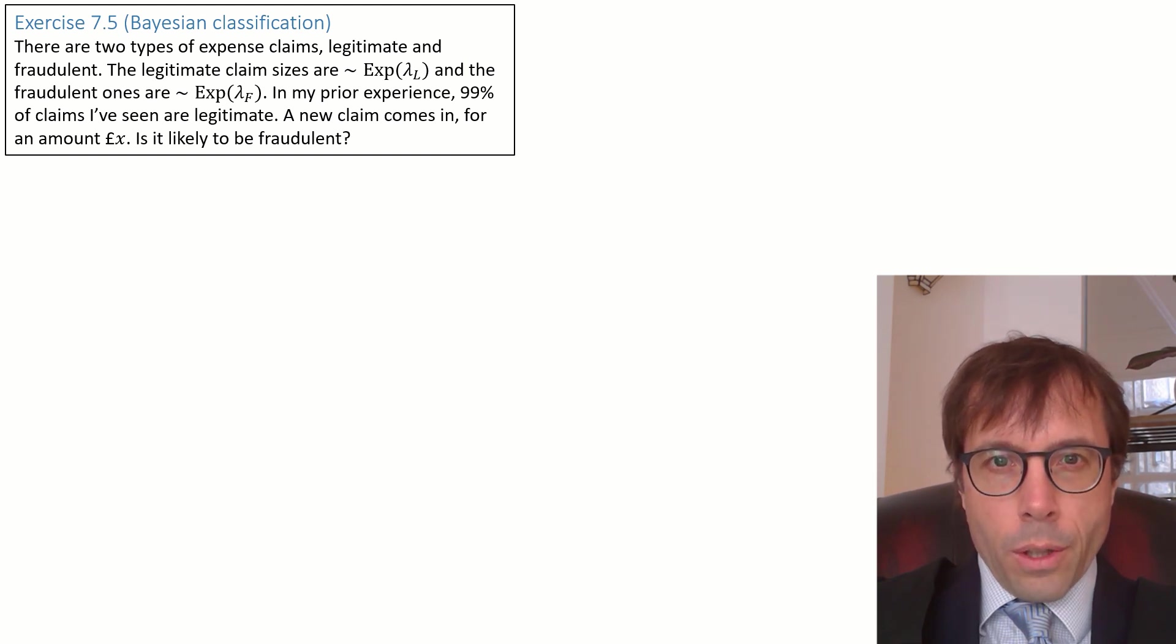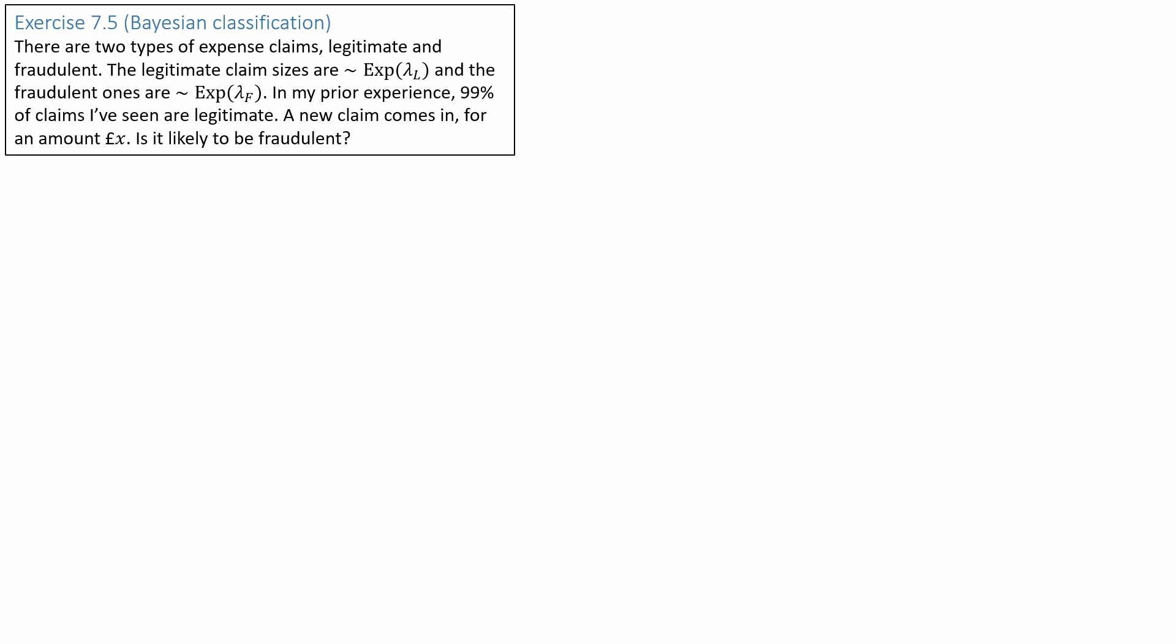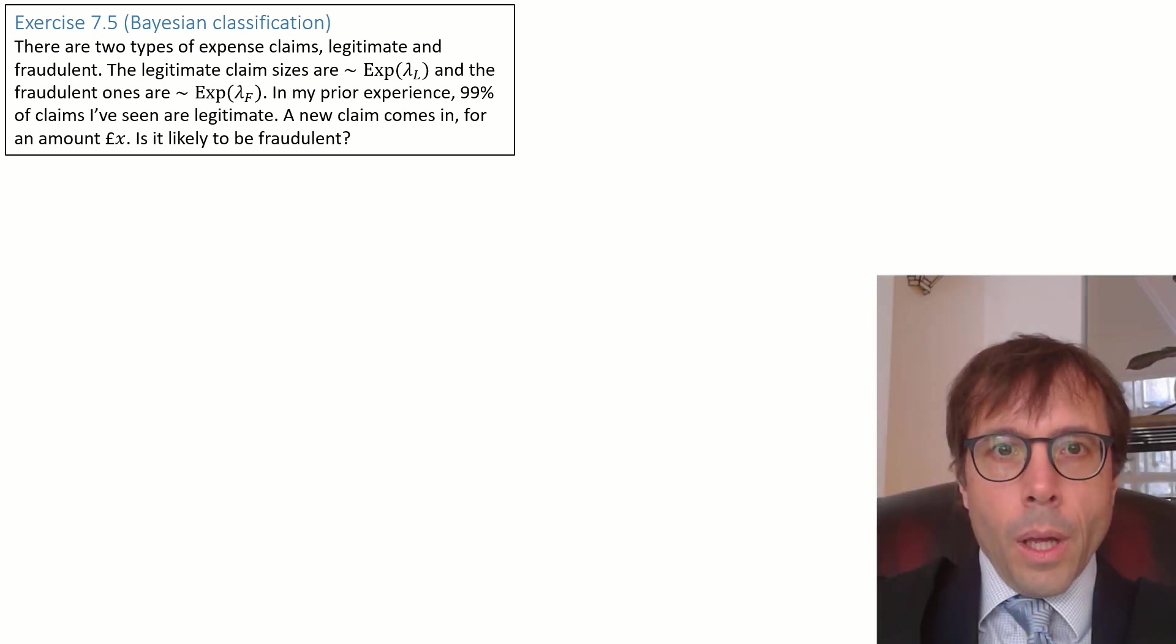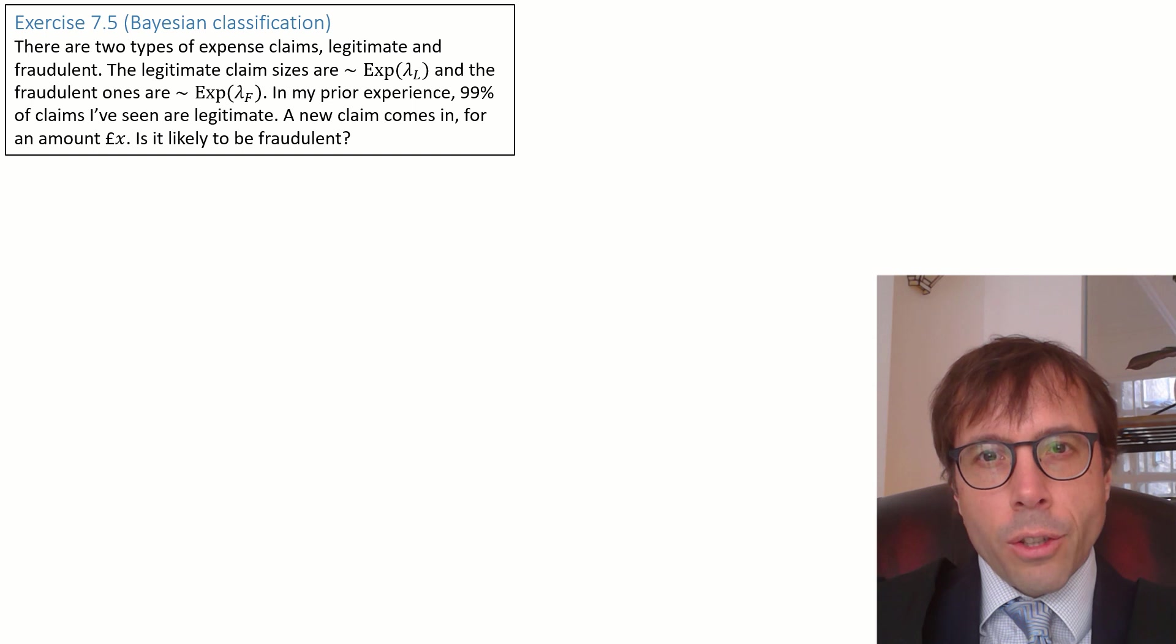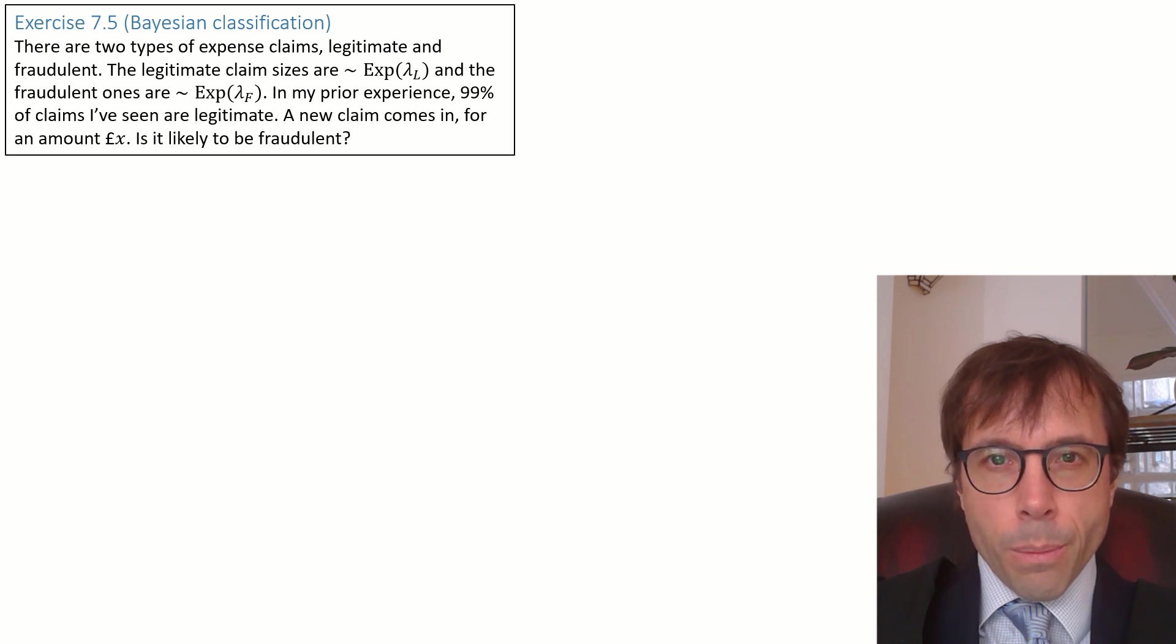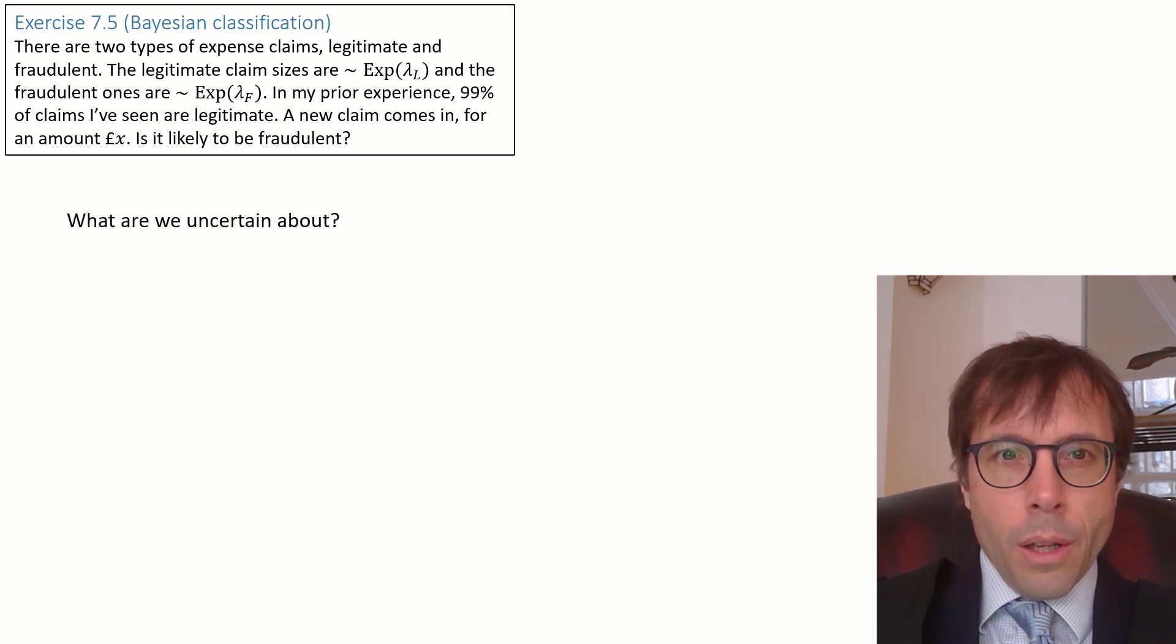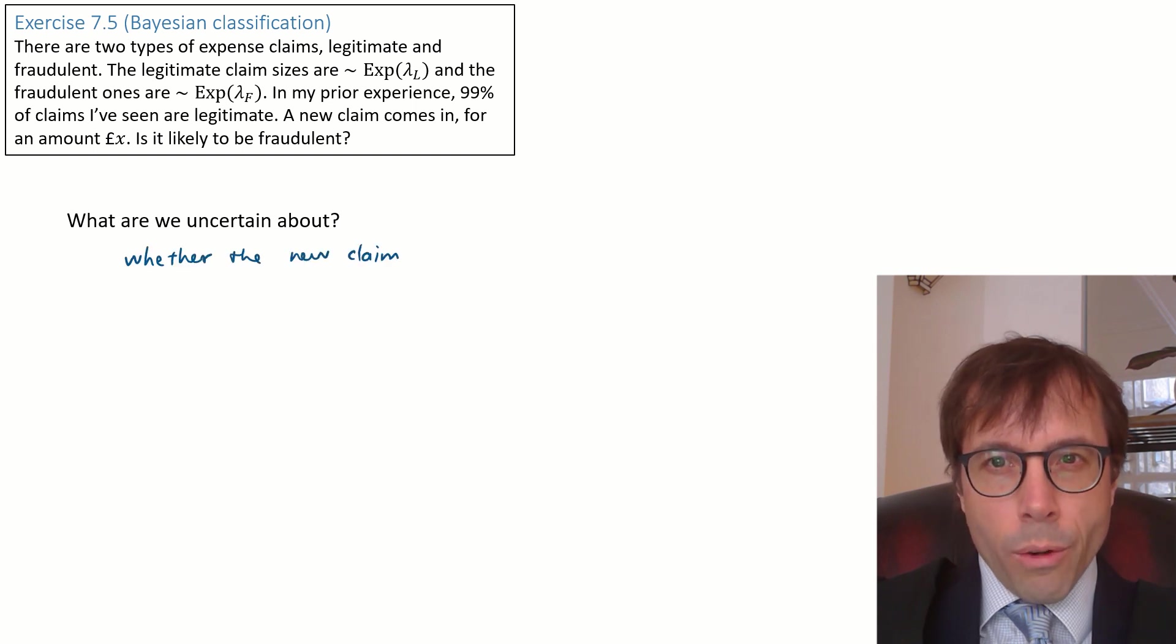Here's a question about classification. I'll give you a moment to read it to yourself. In the examples we've looked at so far, the question has clearly told us here is an unknown parameter. And so we knew we had to treat it as a random variable and find its posterior distribution. But in this question, where are the parameters? I can see lambda subscript l and lambda subscript f. Are those the parameters we're reasoning about? No. What we have to do is look more closely at the question, read between the lines and figure out what we're uncertain about.